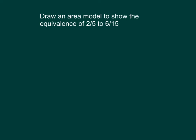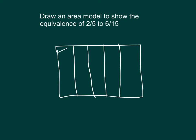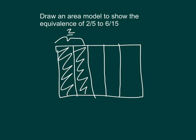Here, we're asked to draw an area model to show the equivalence of 2 fifths to 6 fifteenths. We'll model that first fraction — the 2 fifths. The whole model is 1, and we divide it into 5 parts. We're looking at 2 of those parts, so we've modeled 2 fifths. Now, we have to get to the point where we are looking at 6 fifteenths.